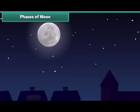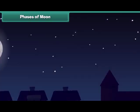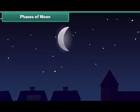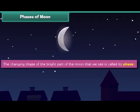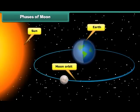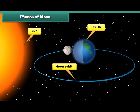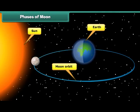You must have noticed that the moon does not always appear as a perfect circle. That is because it goes through phases. The changing shape of the bright part of the moon that we see is called its phase. Sunlight strikes the moon at different angles throughout its journey around the Earth. The part of the moon facing the Sun is lit, whereas the part facing away from the Sun is in darkness.